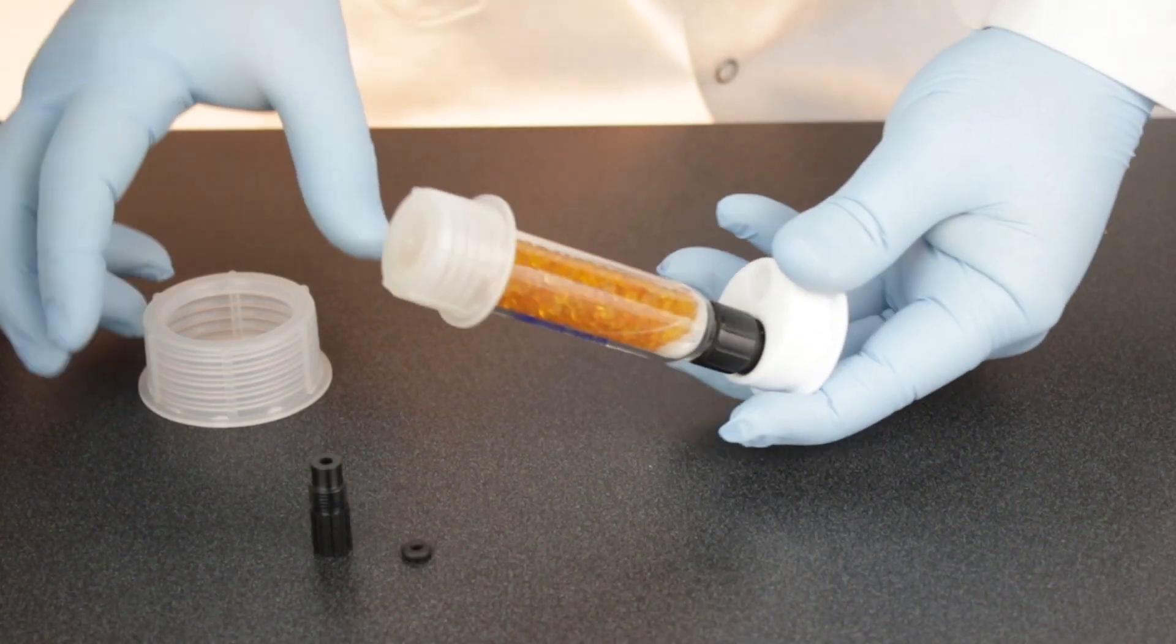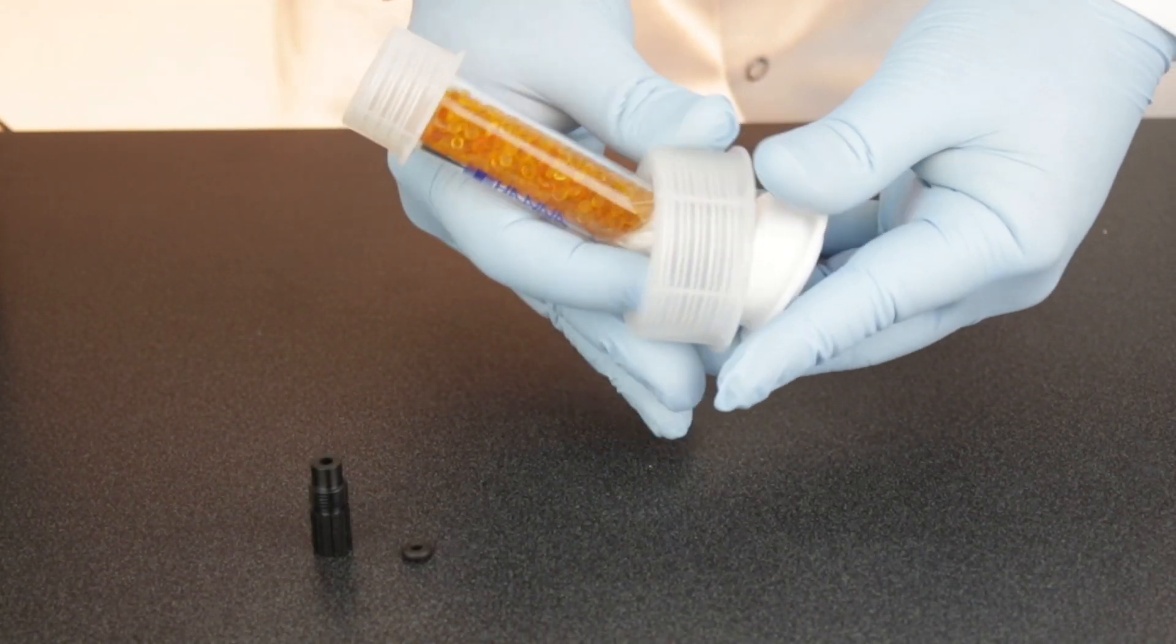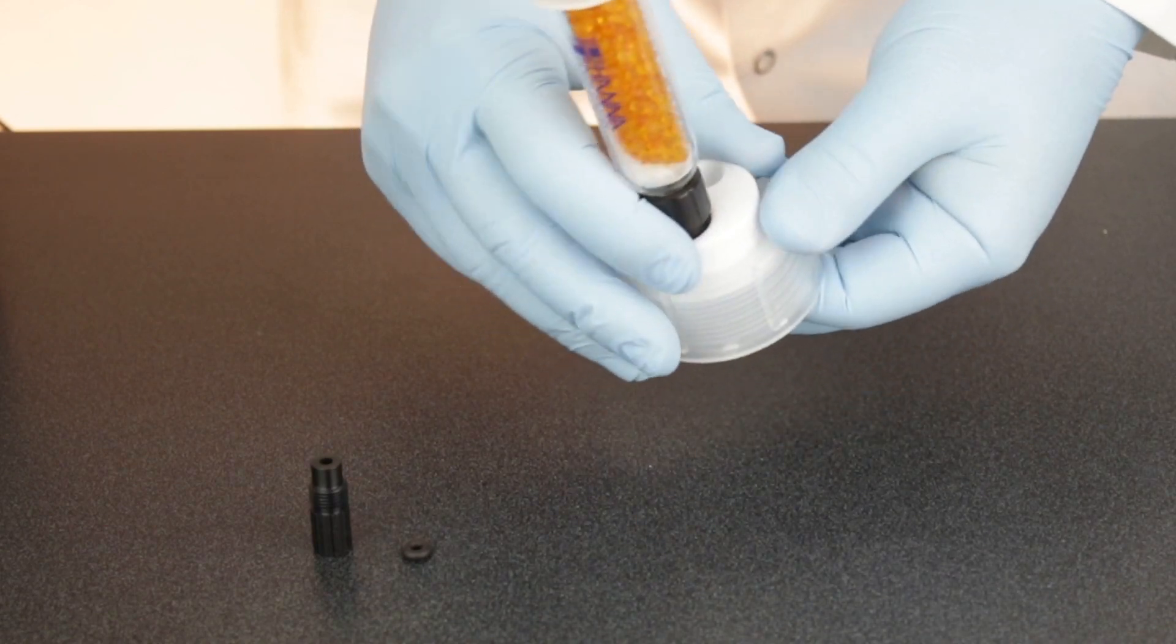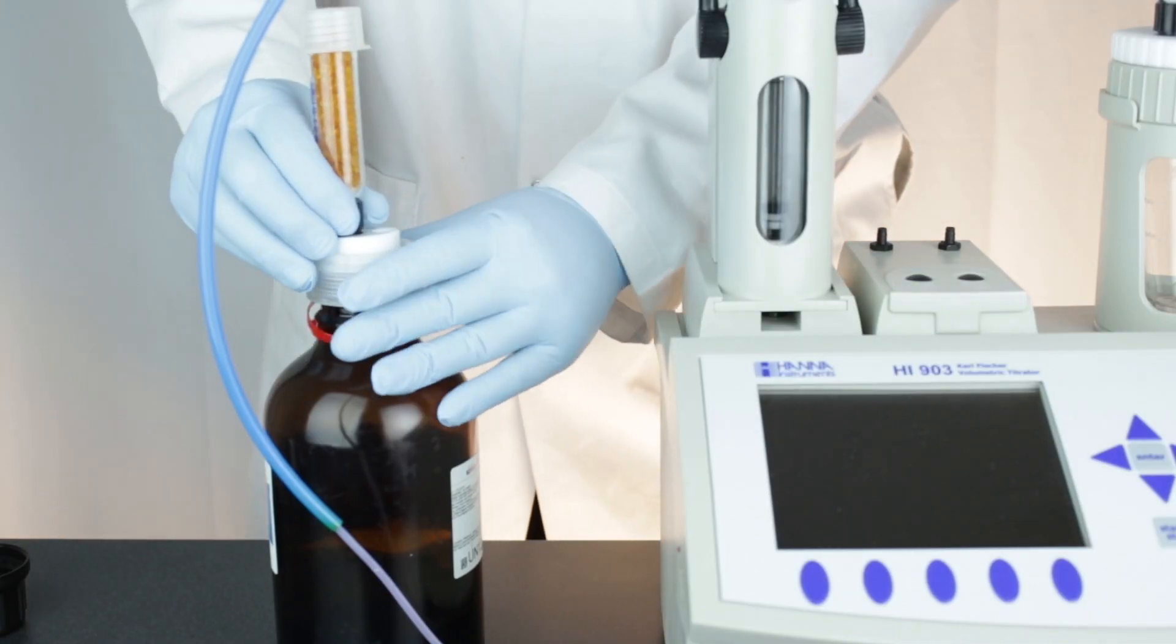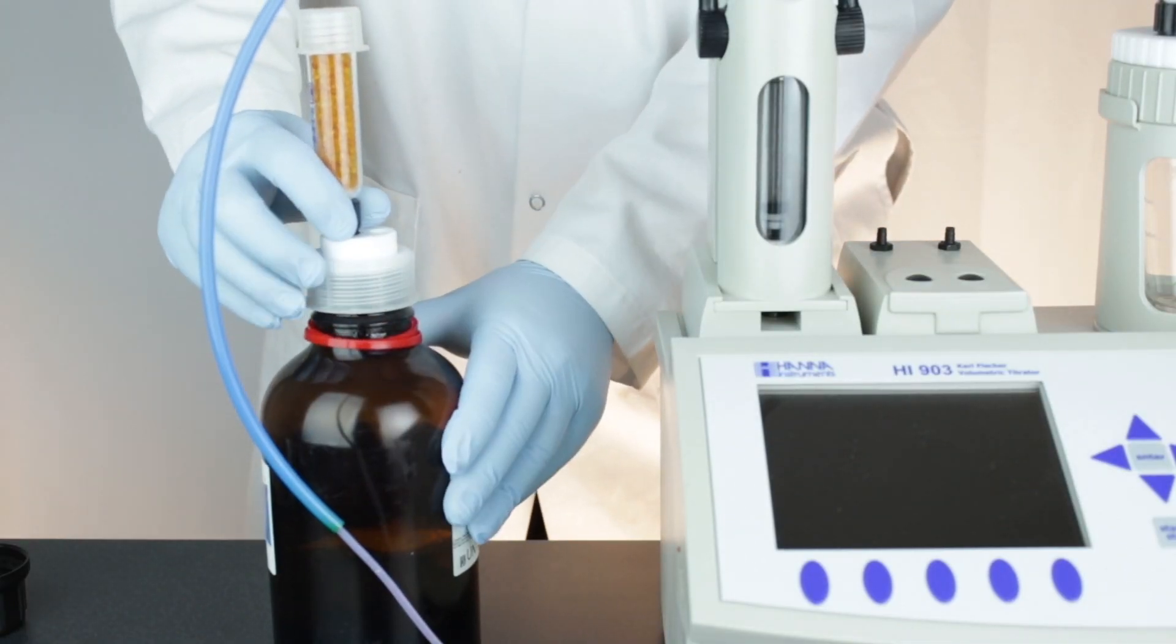Next, place a GL45 clear bottle screw cap over the assembly and screw it onto the titrant bottle.